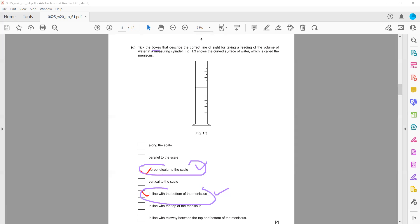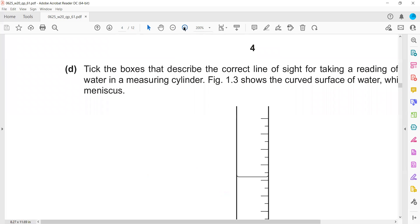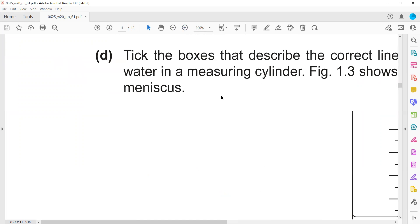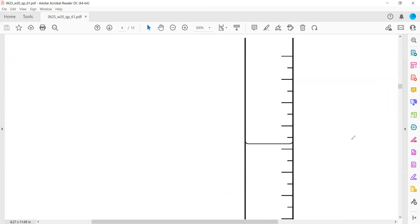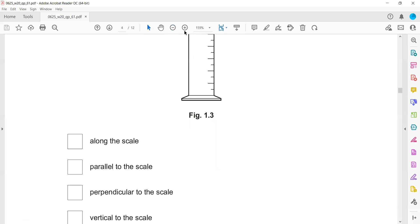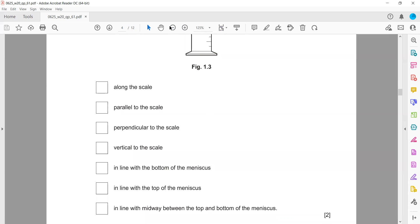There's always a curvature, as you can see here when I zoom in. When we read the level, we always read the bottom of the meniscus. We should be in line with the bottom meniscus, not the top. We should look from the side where the scale markings are, perpendicular at 90 degrees, and in line with the bottom meniscus.